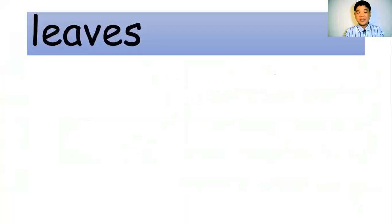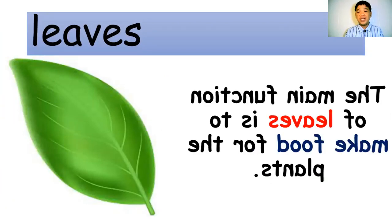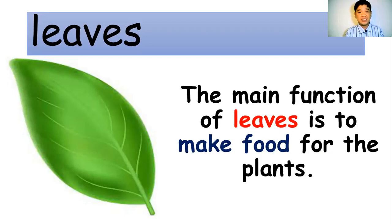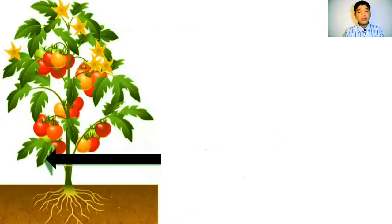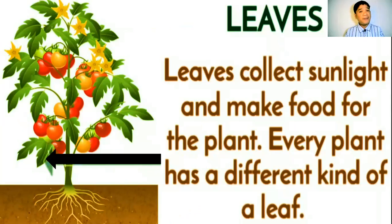Let's start with the leaves. Leaves are one of the parts of the plant, but what is the main function of the leaves? The main function of the leaves is to make food for the plant. Leaves can collect sunlight and make food for the plant. Every plant has a different kind of leaf. Leaves need sunlight in order to make food for the plant.